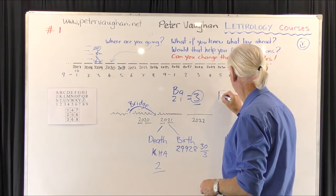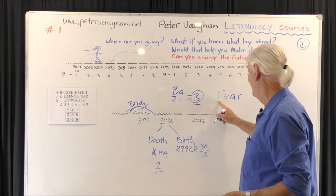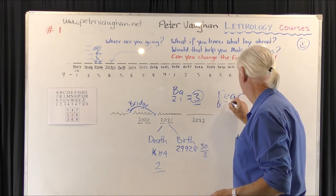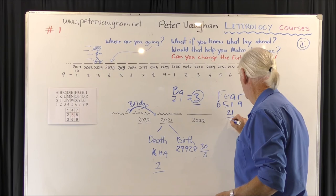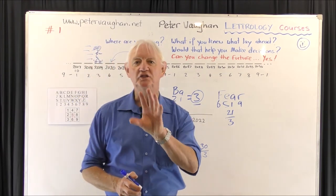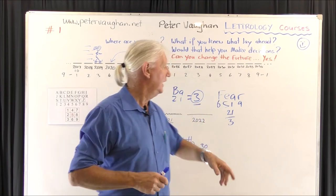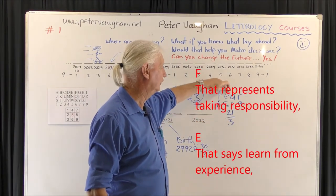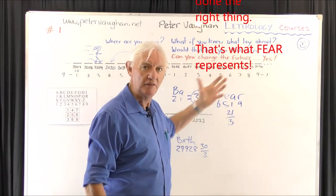Fear. What's fear? Everybody puts that acronym up — fear is False Evidence Appearing Real. But you've got 6, 5, 1 and 9. 6 and 5 is 11, 1 is 12, and 9 is 21. Fear is something that once you learn about, gives you birth. Once you understand it, you've now got freedom. So fear is a word to say, look at what you're doing. Each letter actually means something — it's not just a letter, not just a shape. F represents taking responsibility. E says learn from experience. A is act on it. R says, with full knowing, that you've done the right thing. That's what fear represents.